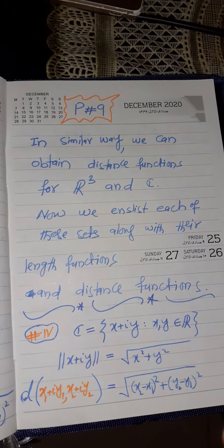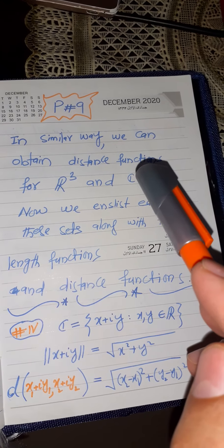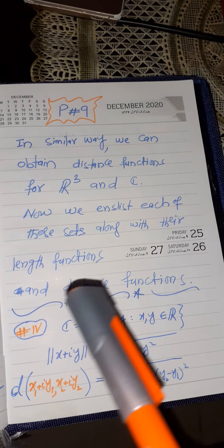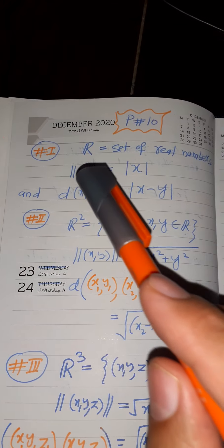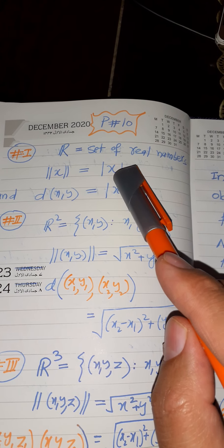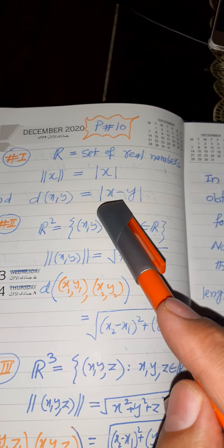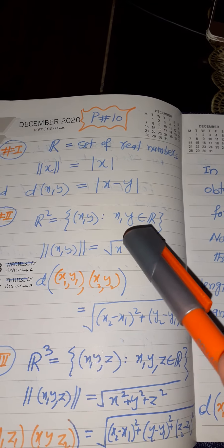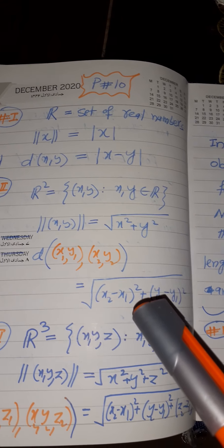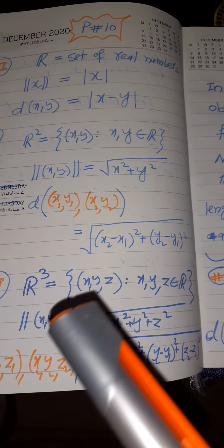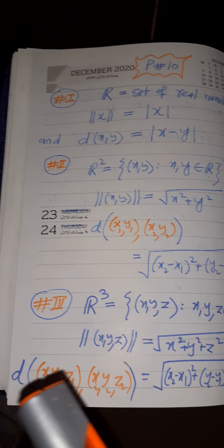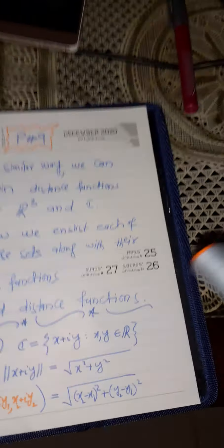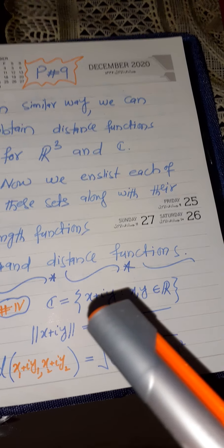In a similar way we can obtain distance functions for R³ and complex numbers. To summarize: for real numbers, the norm function is |x| and the distance function is |x − y|. For R², the norm is √(x² + y²) and the distance is √((x₂−x₁)² + (y₂−y₁)²). For R³, the distance formula is √((x₂−x₁)² + (y₂−y₁)² + (z₂−z₁)²). For complex numbers, the norm is the modulus and the distance formula follows the same pattern.